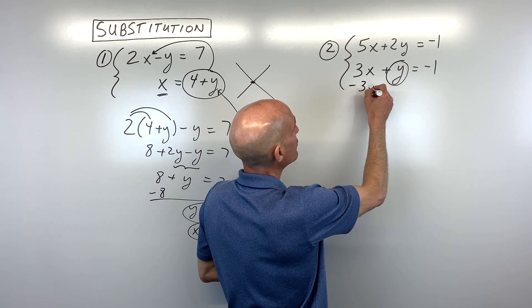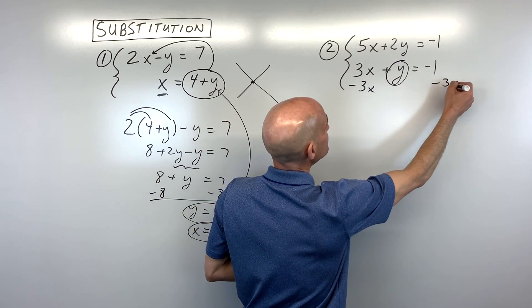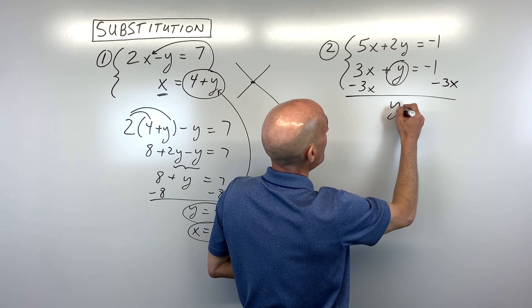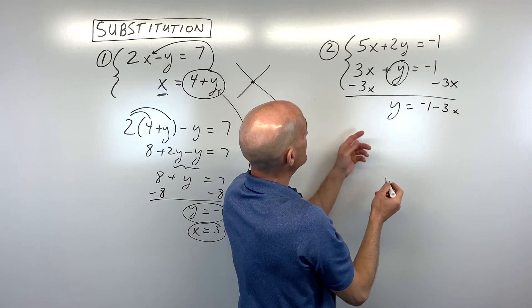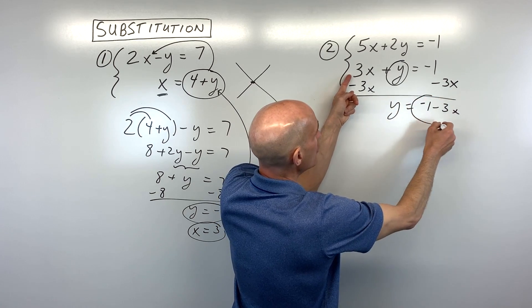We're going to subtract 3x from both sides of the equation. So now we get y equals negative 1 minus 3x - that was for the second equation. Now we know what y equals.